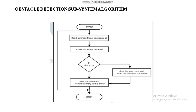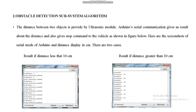In the obstacle detection subsystem algorithm, the ultrasonic sensor interfaces with the Raspberry Pi to check the distance. It checks whether the distance is greater than or less than the threshold level. When the threshold condition is met, a command is sent to the Raspberry Pi controller, which stops the motors.